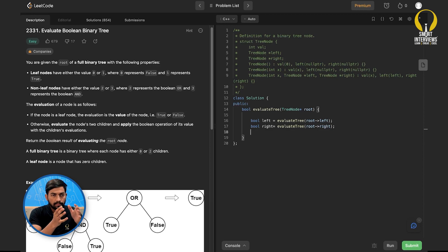Now we have the left subtree value, we have the right subtree value. Now depending upon what operation we have at the root, we will have to evaluate. So if root of value is equal to 2, we will apply the or operation. So left or right. Otherwise, we will apply the and operation, left and right.